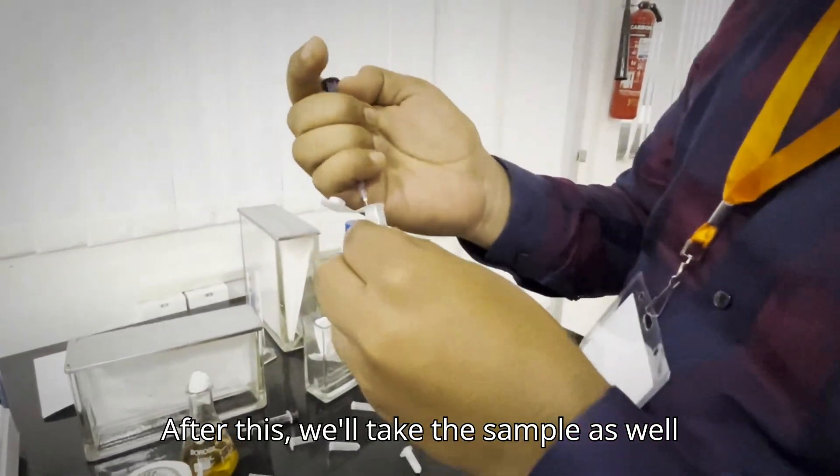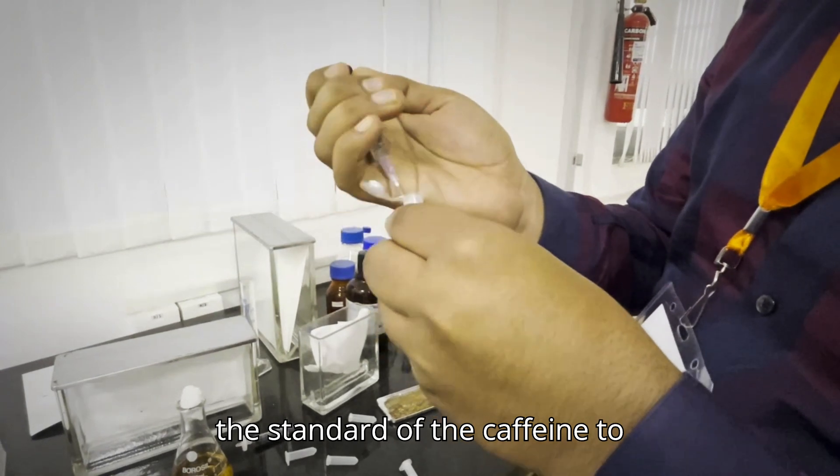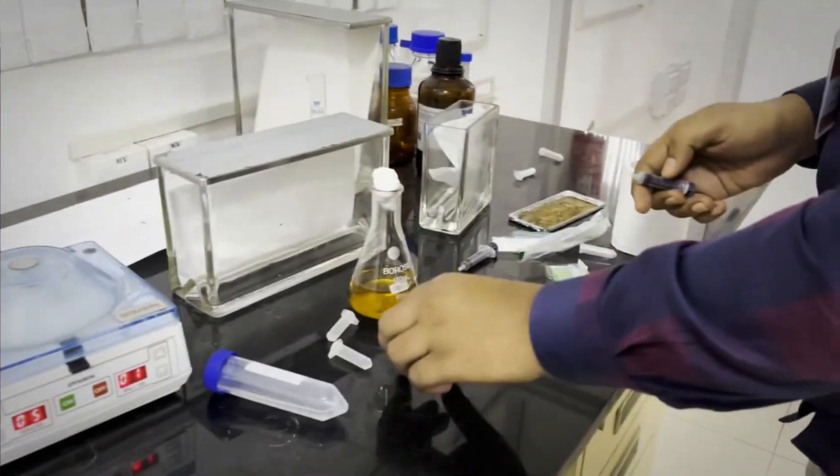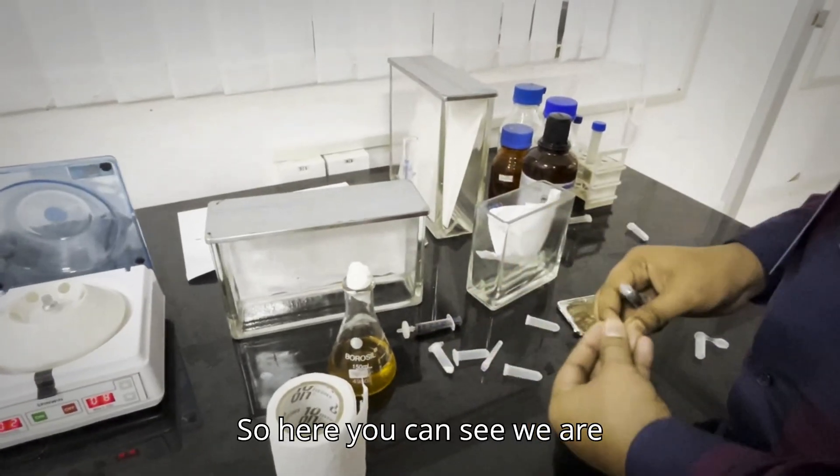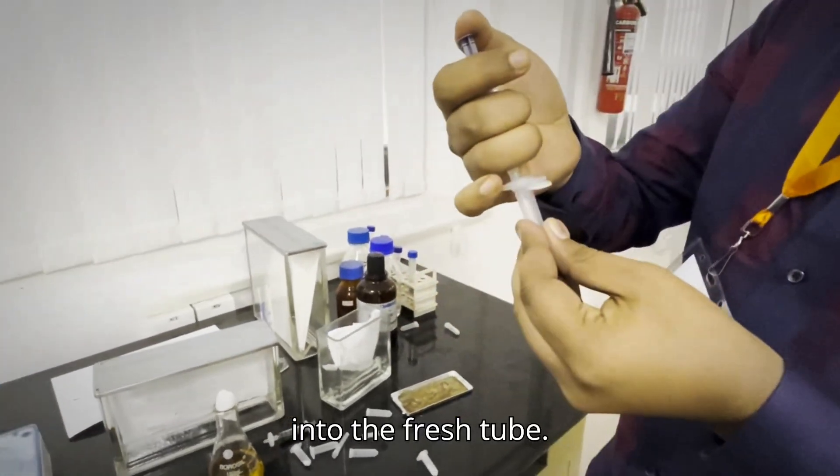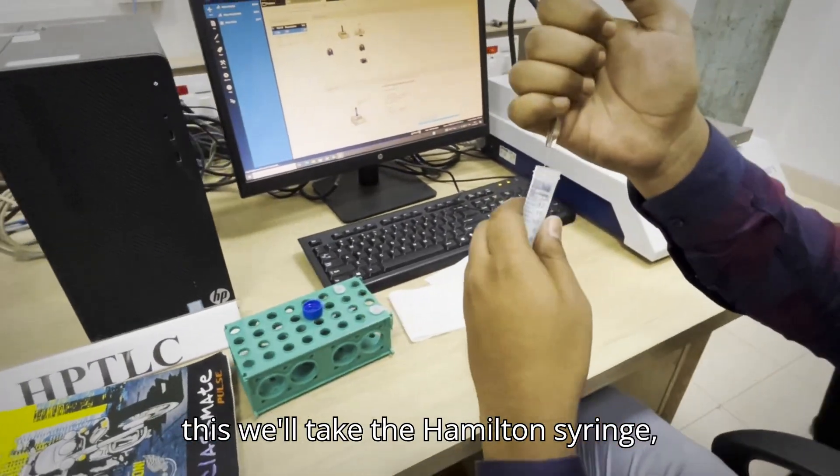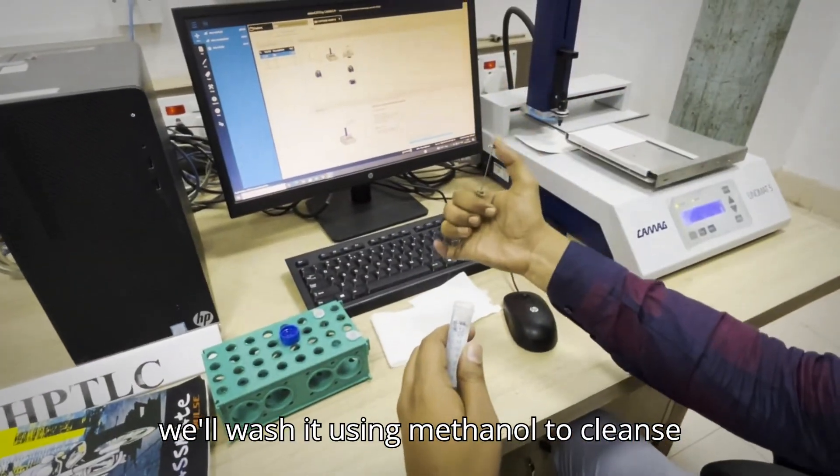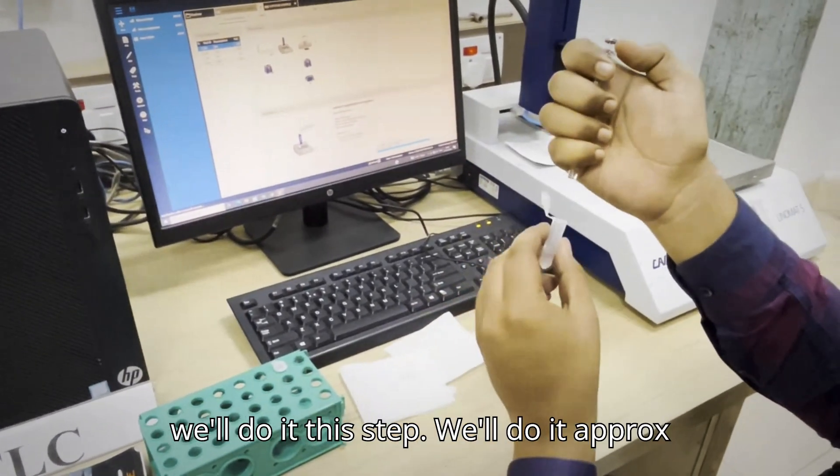After this we will take the sample as well as the standard of the caffeine to filter it. Here you can see we are filtering the caffeine sample into the fresh tube. After this we will take the Hamilton syringe. We will wash it using methanol to cleanse the entire particles which is present inside it. And we will do this step approximately three times.